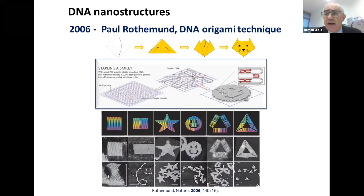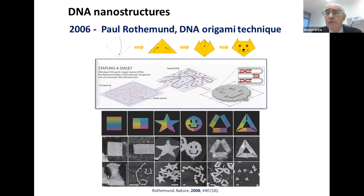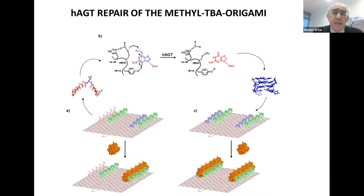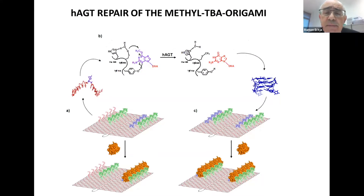It was a fantastic technique to make objects. These objects are limited by the size of the M13 DNA, which is around 100 nanometers. We were totally amazed by all these improvements, and one of the things we did in our laboratory a few years ago was to use these rectangular origamis.